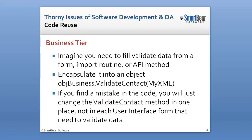Rather than rewriting that code all over the place, simply create a business tier with a method called validate contact, then pass in the XML or record set that has your contact information, and it will do all of the validations needed for the contact record. Whether you call it from your add process or your edit process, the validation is going to be the same. The big value is that if you want to add additional validation rules, you add it in one place and it applies everywhere. Similarly, if you find a bug, you correct it in that one place without having to change it in all the user interface locations.